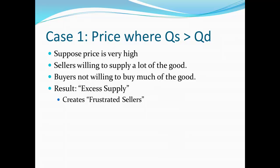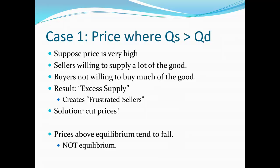This creates frustration for the sellers, who really want to sell their product but find that they're unable to. This creates a natural incentive for sellers to start cutting prices — if I want to make sure people buy from me, all I have to do is undercut my competitors by offering a slightly lower price, and I end up with buyers and can sell my product. This process continues as long as quantity supplied is greater than quantity demanded, because there will still be frustrated sellers with a reason to cut prices. This proves that if prices are above equilibrium, they're going to tend to fall — so they are not equilibrium prices, since there is a natural tendency for them to change.